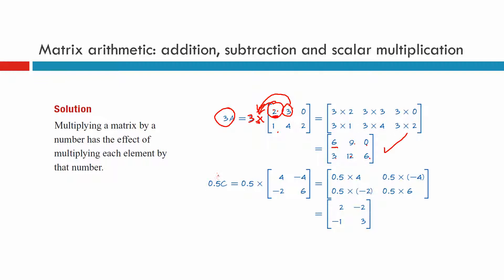The other one we had to do was 0.5C. 0.5C. Half every number. C is four, negative four, negative two, six. Half of four, two. Half of negative four, negative two. Half of negative two, negative one. Half of six, three. Very easy to do.